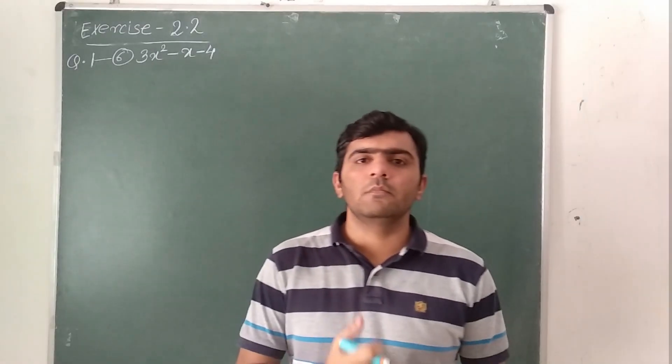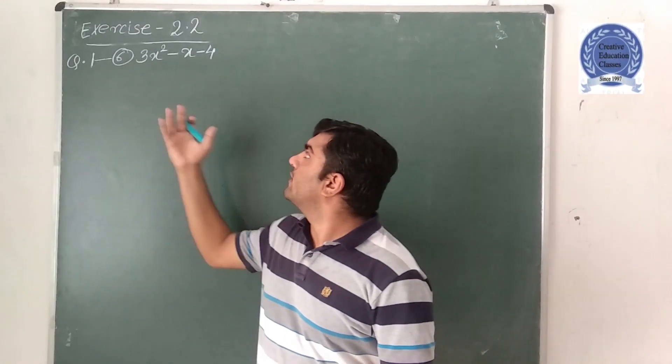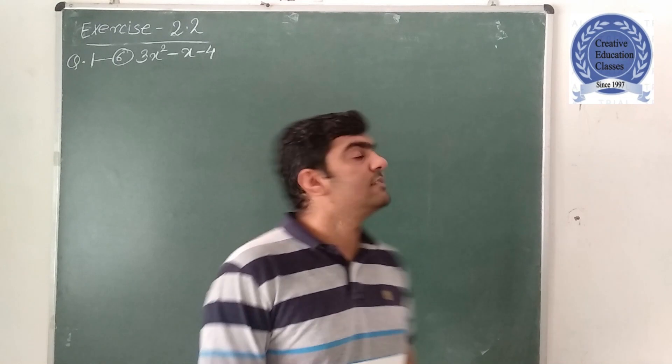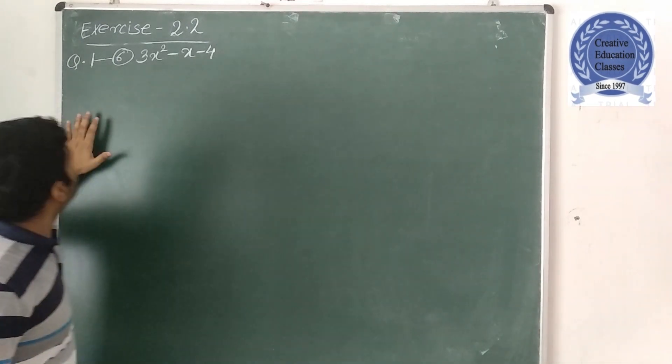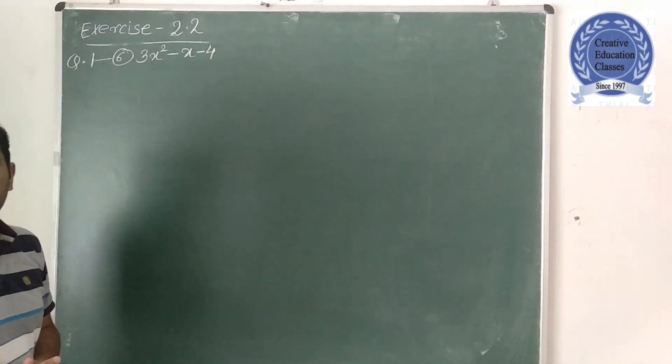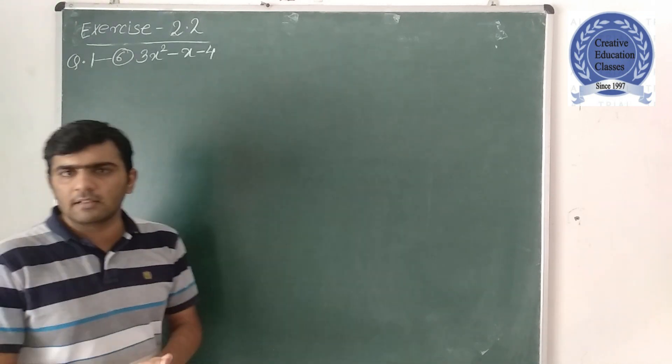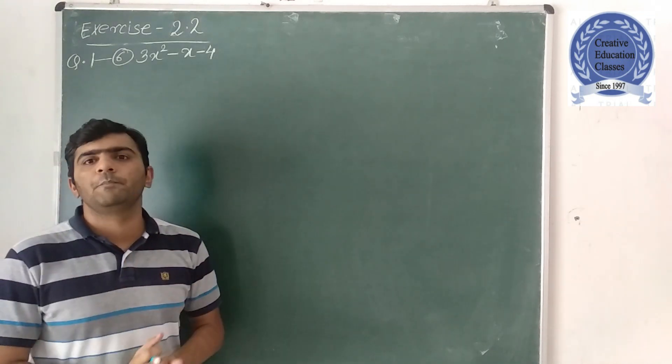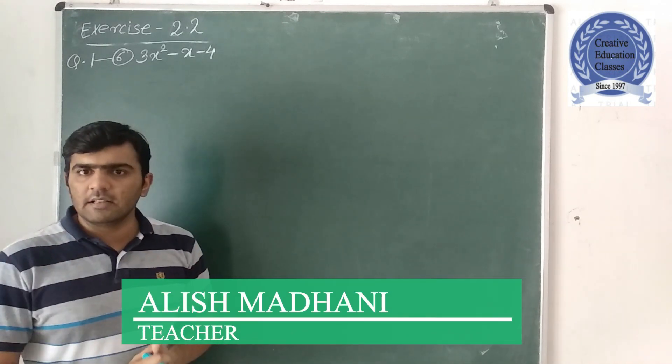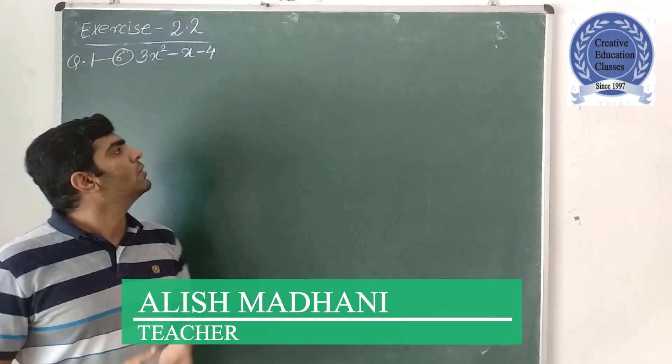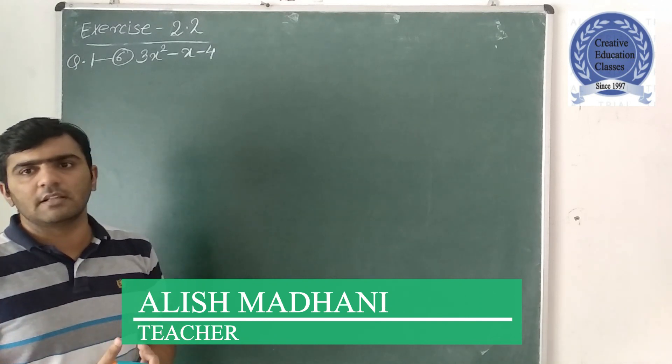Hello everyone, now in this we are going to solve exercise 2.2, question number 1, 6 sum. Same type of sum where we have the sum of zeros and then we have verification of the sum of zeros.